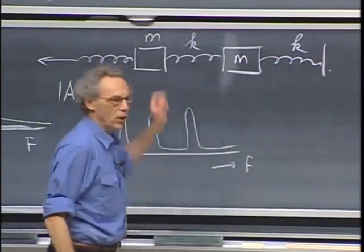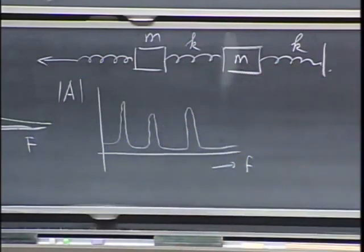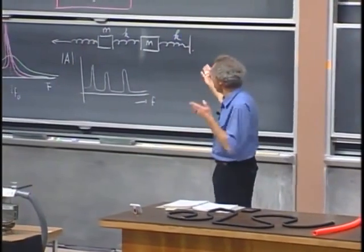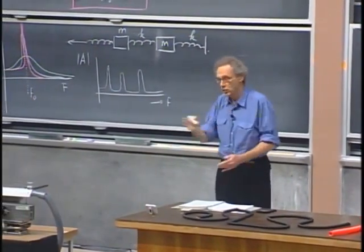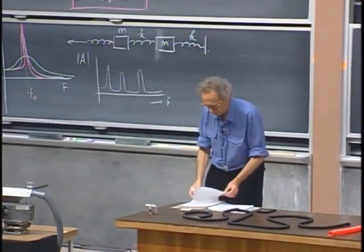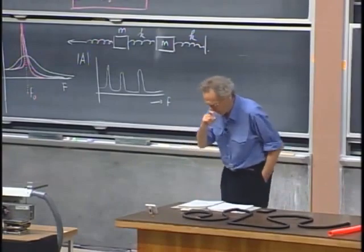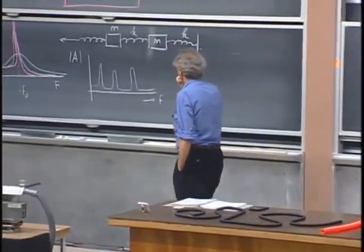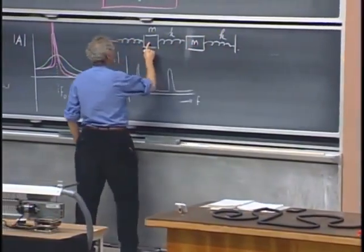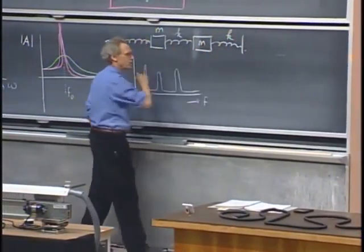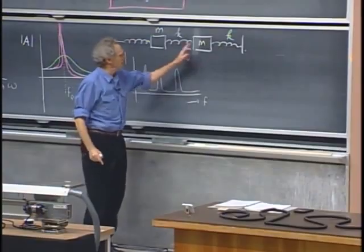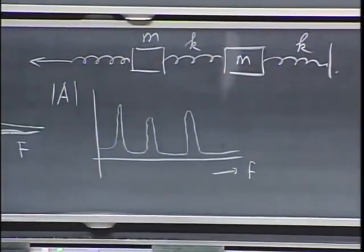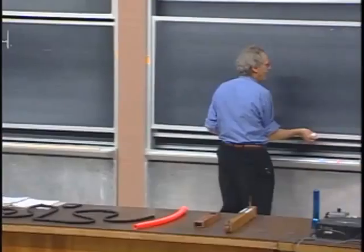And depending upon how many of these objects you have, you get more and more resonances. And these resonances can all be found by driving the system and searching for them. If I go to a system whereby I have an infinite number of these masses, we call them coupled oscillators, these oscillators are coupled through the springs. An infinite number of coupled oscillators would be a violin string.